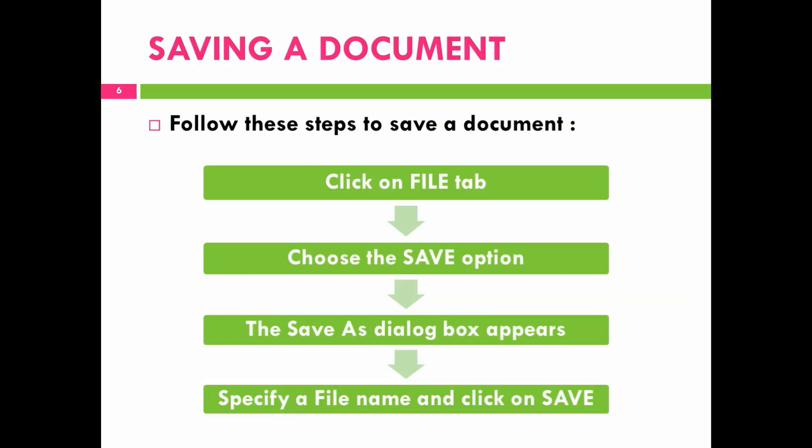Next is saving a document. You have to follow these steps to save a document: click on the file tab, then choose the save option. The save as dialog box appears. In that, specify a file name and then click on the save button.